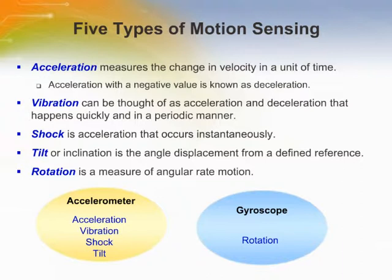Nowadays, the motion sensing function becomes very commonplace in a wide range of areas such as consumer electronics, medical devices, industrial equipment, and automotive electronics. Motion sensing can be classified into five types: acceleration, vibration, shock, tilt, and rotation.